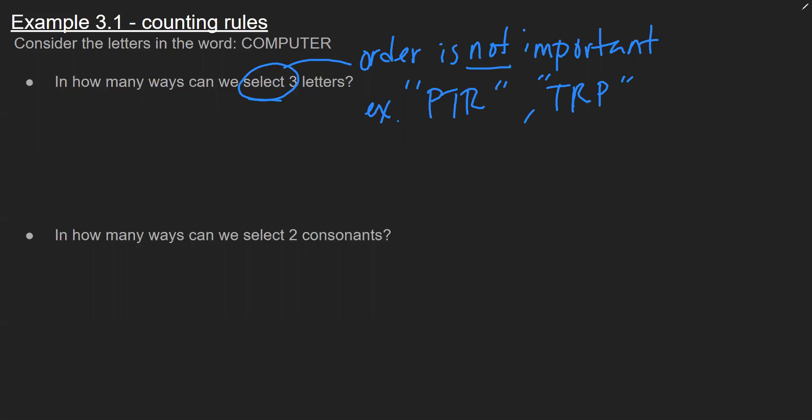So that being said, we have this counting rule N choose K that you've seen in lecture, where this counts for us number of ways to select K objects out of N.